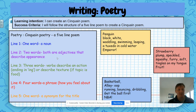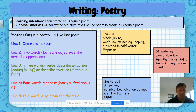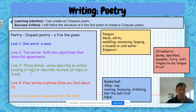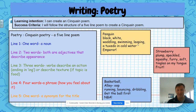Then two words — they're adjectives and they describe the appearance. So a penguin is black and white. Line three is verbs to describe an action ending in -ing. It's a little bit of a tip for you — or you can describe the texture if it's food. But looking at a penguin: waddling, swimming, and leaping. They're all good verbs that a penguin does.